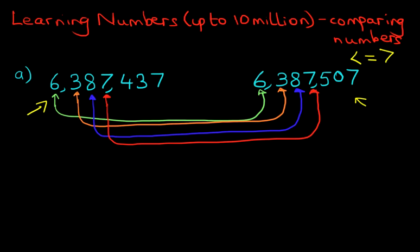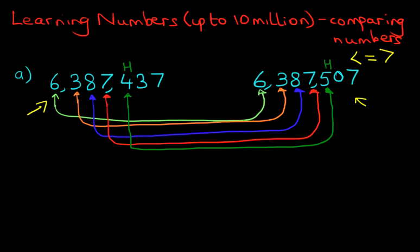Now we're going to move on to the hundreds — that's digit 4. If we take this across to the hundreds over here, in this one it is 5. The hundreds are different, which means we can now work out which number is larger and which is smaller. On the left we've got 4 hundreds, on the right we've got 5 hundreds. Which number is bigger, 4 or 5? Well, 5 is bigger. Therefore, the arrow points at the number to the left, because 4 is smaller than 5.